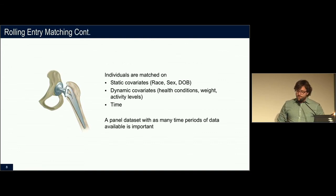What you do with rolling entry is you match individuals based on static covariates. So their race, their sex, their date of birth, things that do not change. You match on dynamic covariates. So their health conditions, their activity levels, all these things that could change over time. And the last thing you match on is the time itself. We want to look at a treatment person and then control person that could have started this treatment at the same time.